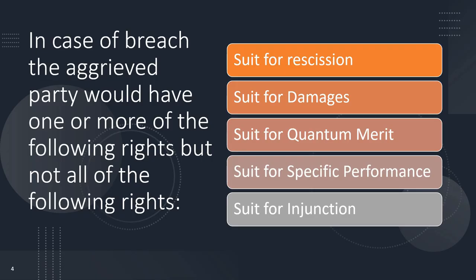In case of breach, the aggrieved party would have one or more of the following rights — but not necessarily all of them, depending upon the situation. These rights are: suit for rescission, suit for damages, suit for quantum meruit, suit for specific performance, and suit for injunction. These are the different remedies available to an aggrieved or injured party. Let's check them out one by one.